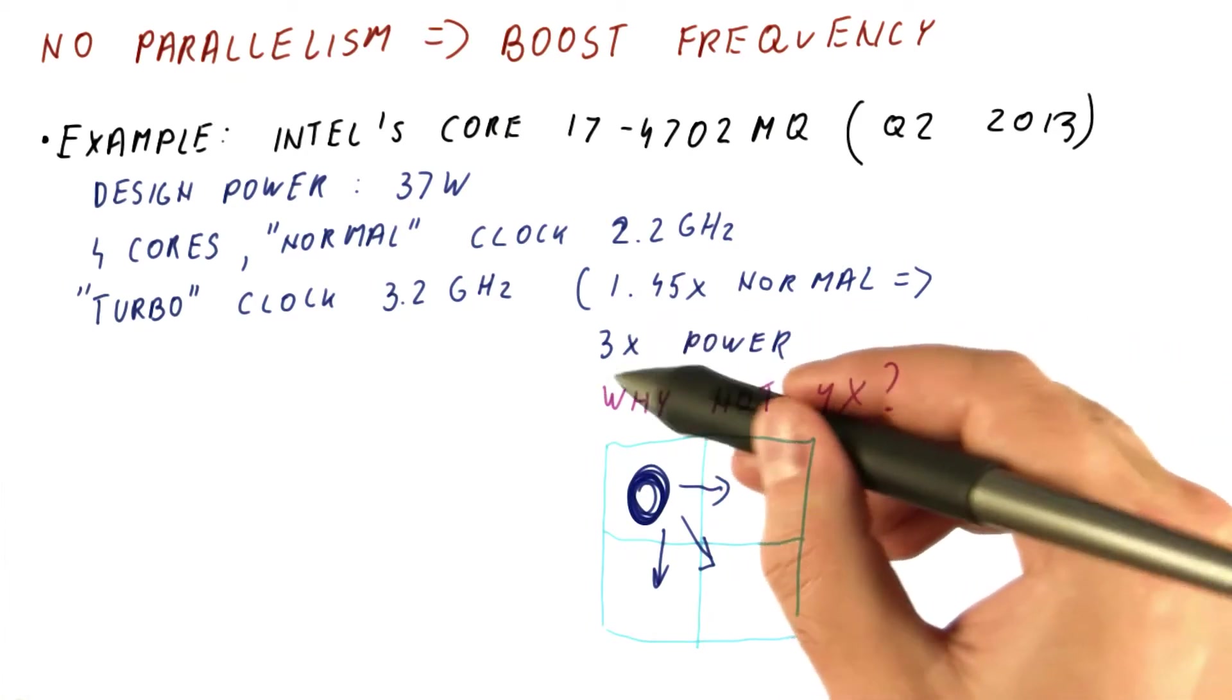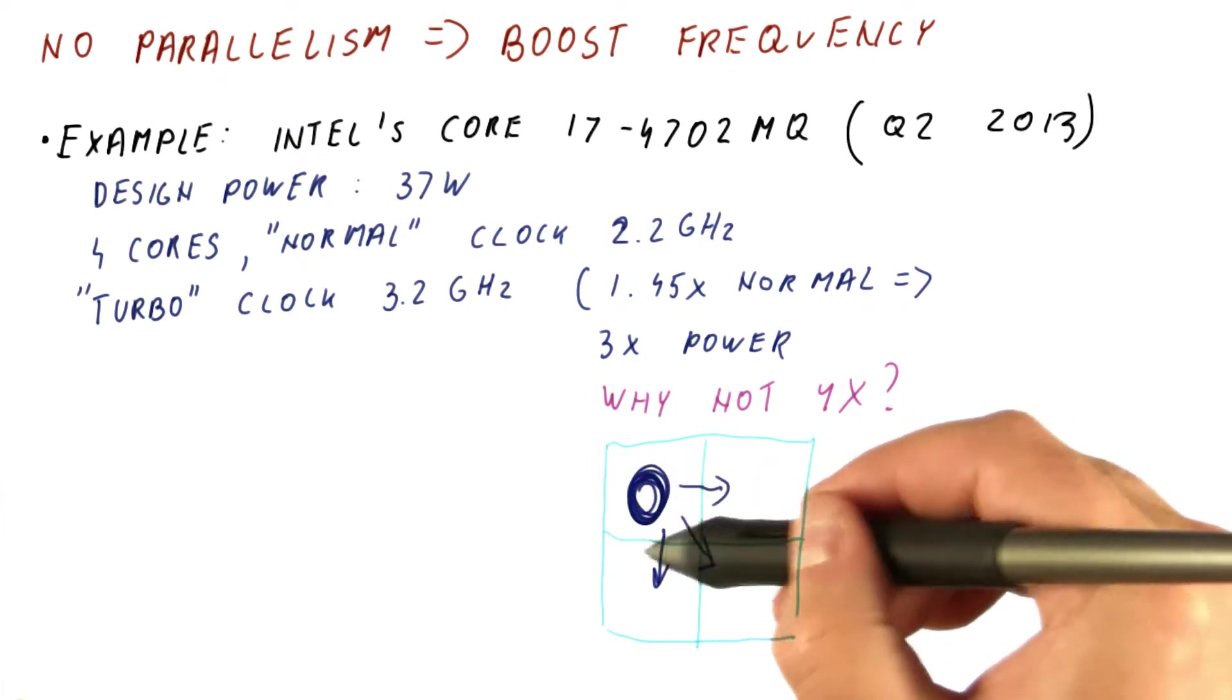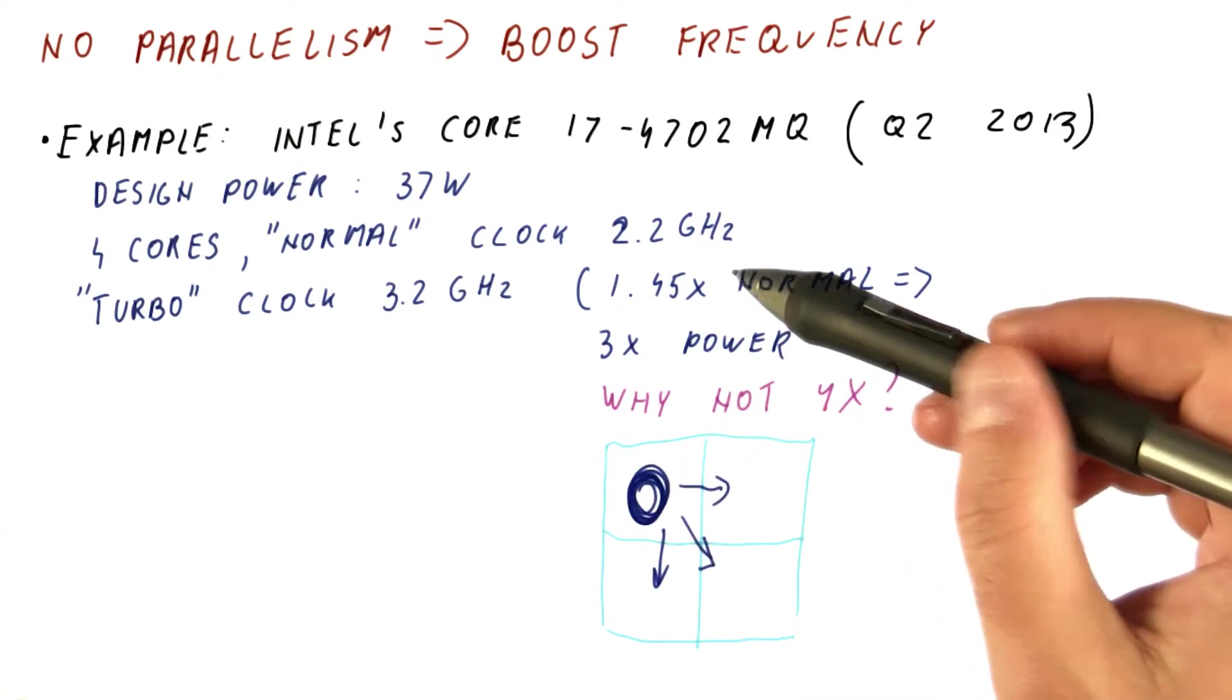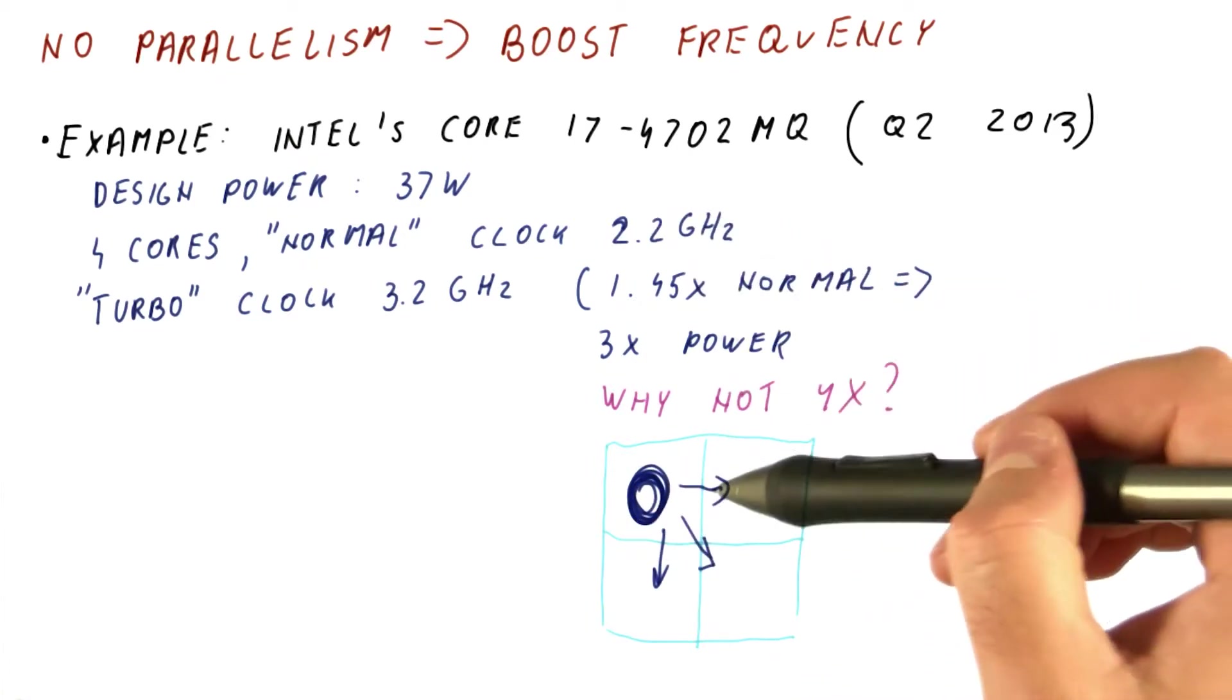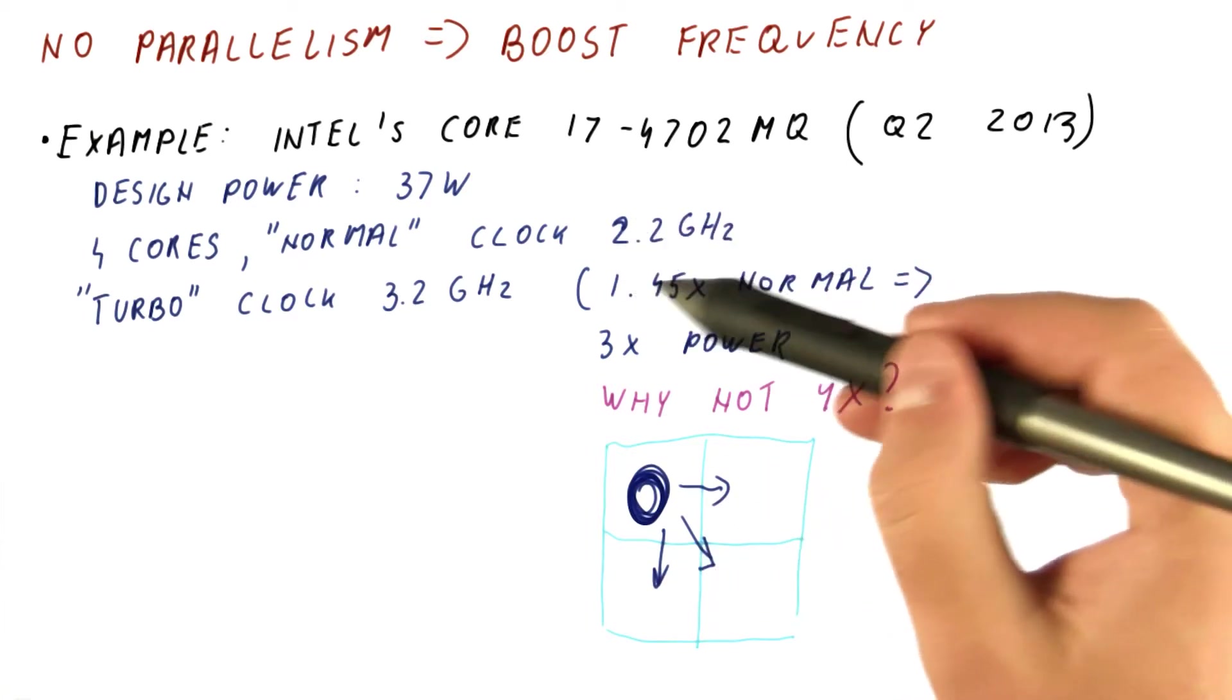Because at three times the power, this part of the chip achieves similar temperatures to those achieved by spreading the heat around at 2.2 gigahertz.